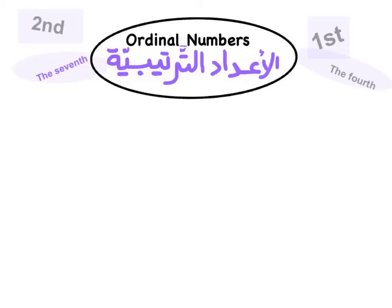Now we're going to talk about ordinal numbers, الأعداد الترتيبية بالعربية. Ordinal numbers means the numbers that you use to put things in ranks, in order. Like in English you have the first, the second, seventh, fourth — for example, 'I always came in first in my class.'